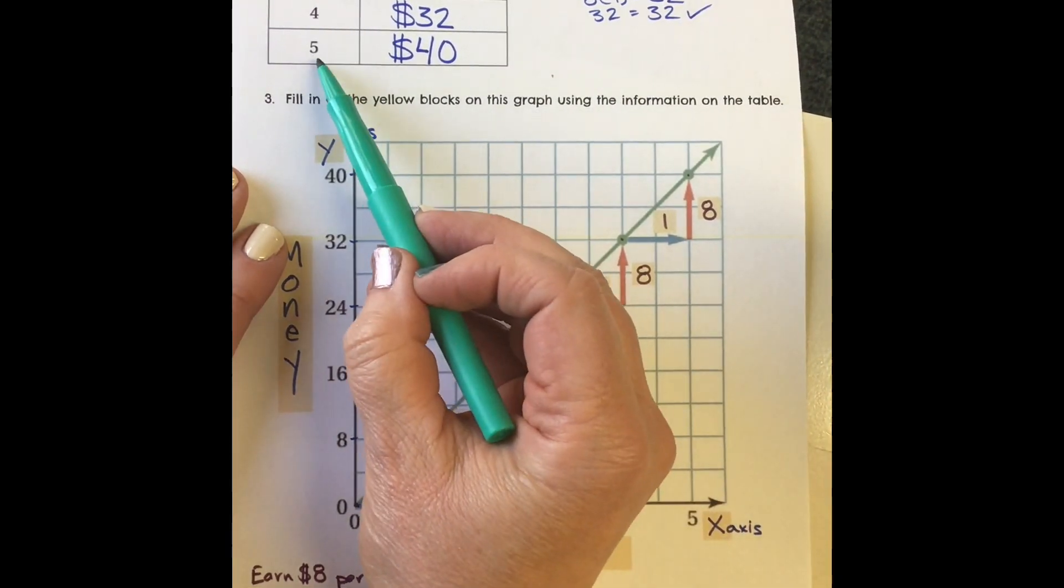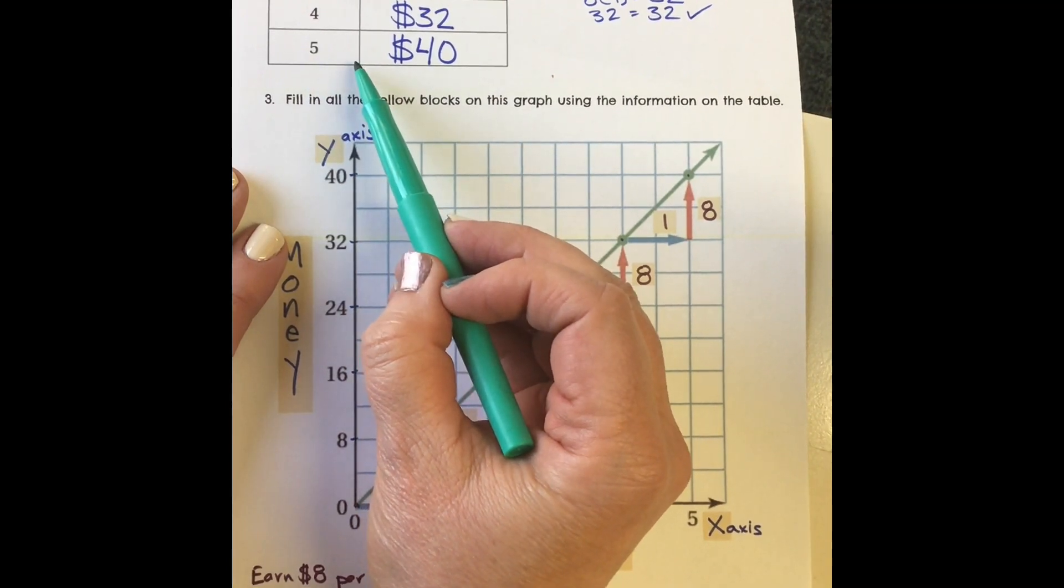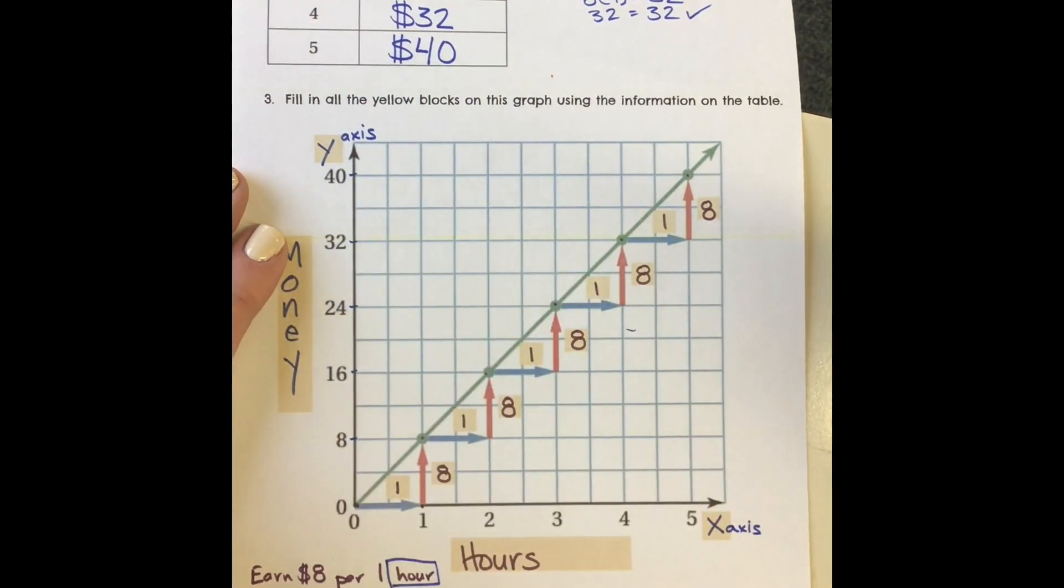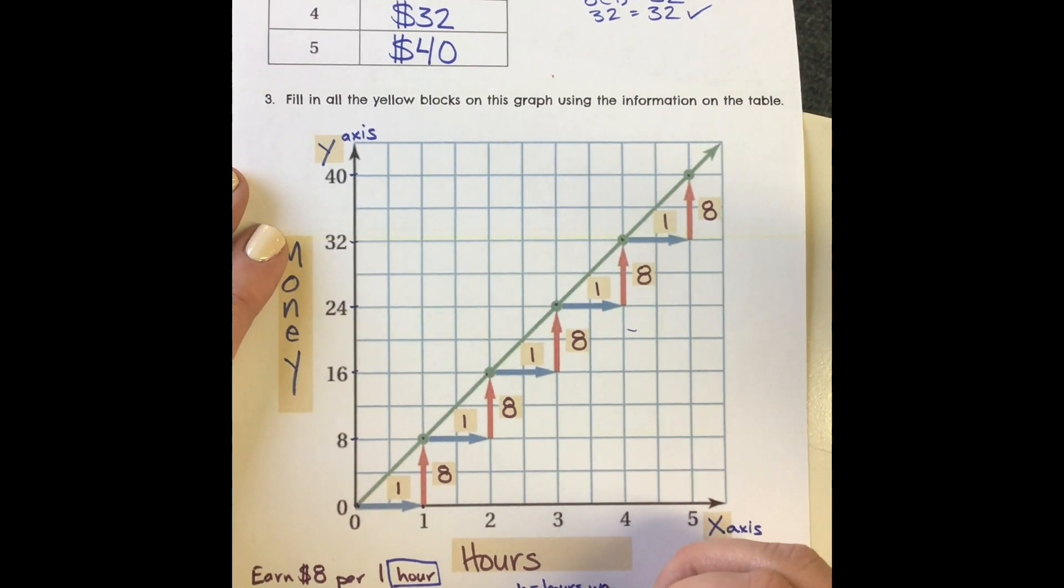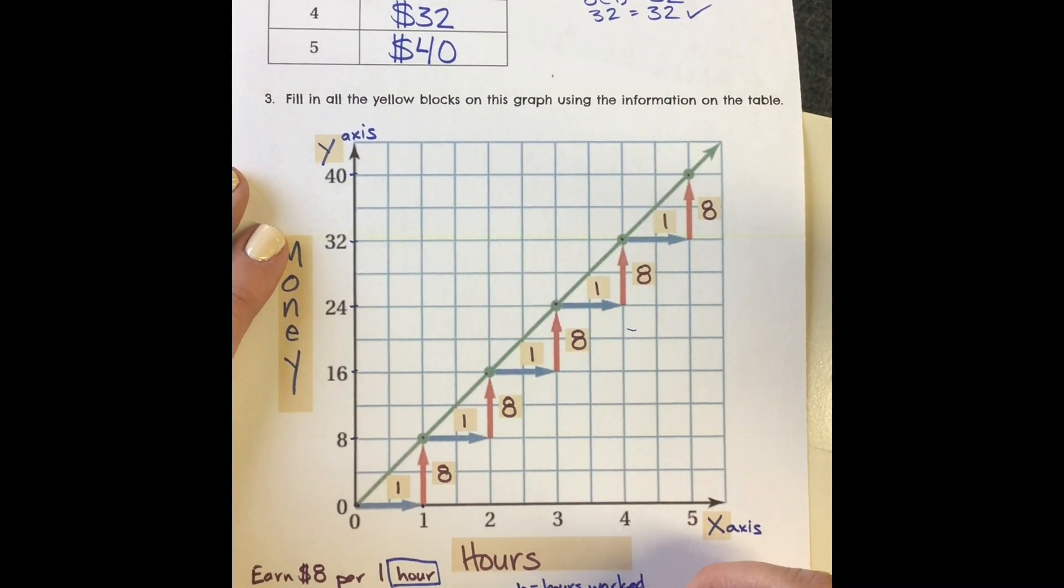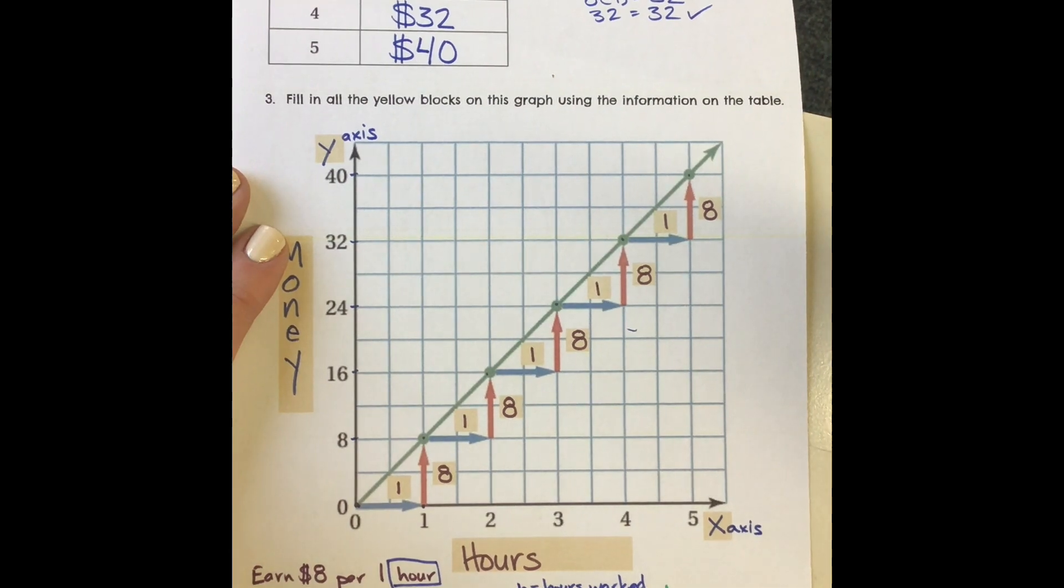Which makes sense. I said 5 times 8, the number of hours, equals 40, and that would work here. So can you see how H equals the hours worked, and M equals the money earned? I hope that's clear. Good job, guys.